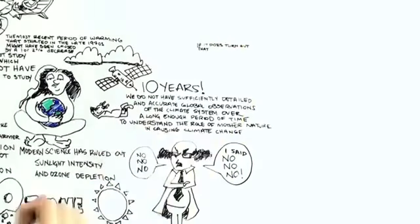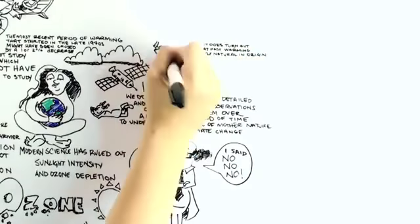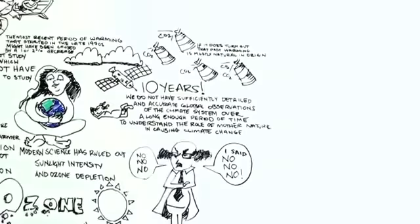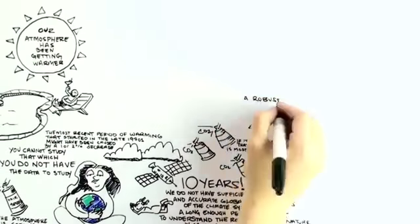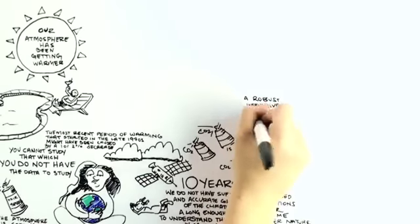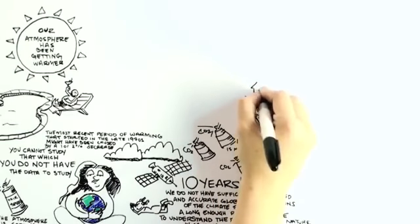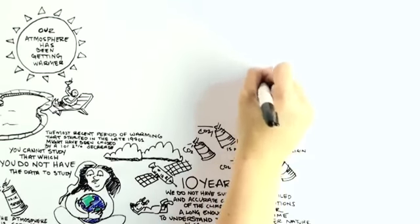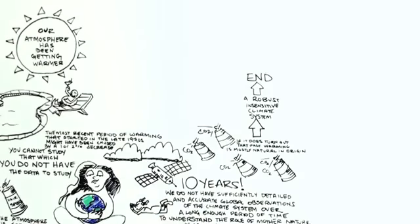Now, if it does turn out that past warming is mostly natural in origin, then it takes a much stronger push to cause warming than just an increase in CO2 levels, which indicates a robust, insensitive climate system. In that case, the natural warming can be expected to end at some point, and little additional warming from our greenhouse gas emissions would then be expected later.